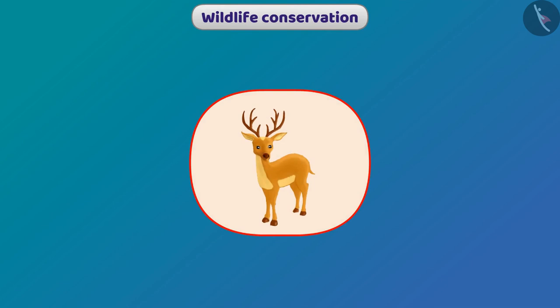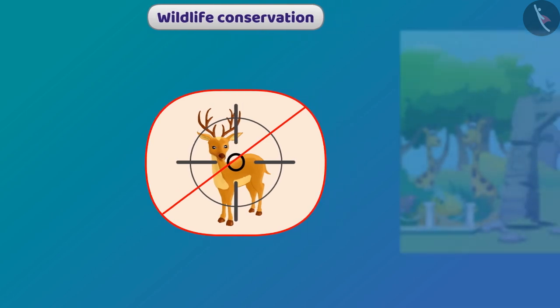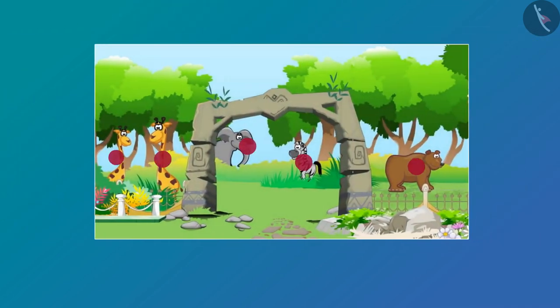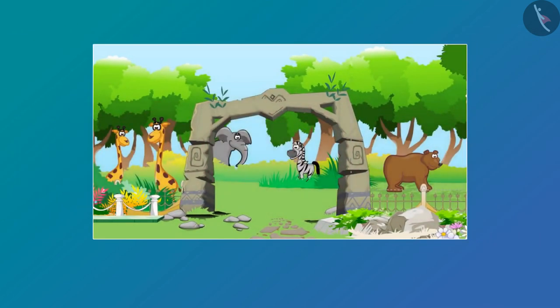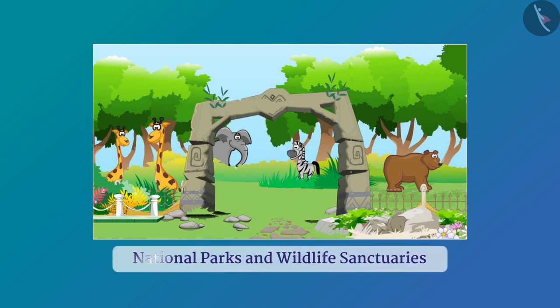We should also conserve wildlife. For this, we should fairly follow the ban on animal hunting. Animals and their habitat have been preserved with the help of national parks and wildlife sanctuaries. Discuss in your class about how you can help in the conservation of wildlife and forest.